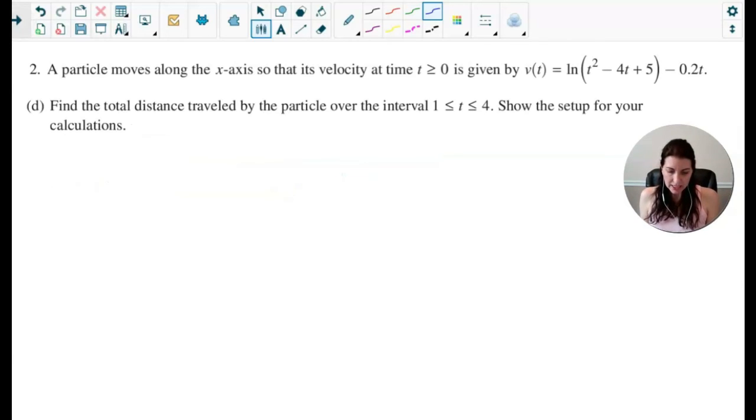And then lastly, part D says to find the total distance traveled by the particle over the interval from 1 to 4 and show the setup for your calculations. And the main thing to remember here is if I just do the integral of velocity, that gives me displacement. But since this question is asking about the total distance, you would need to set up the integral from 1 to 4 of the absolute value of velocity. That way, you get the total distance. And when you do that in your calculator, you end up getting a total distance of 0.958.